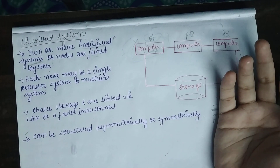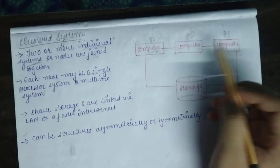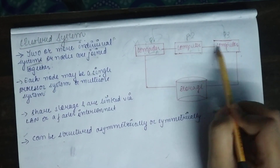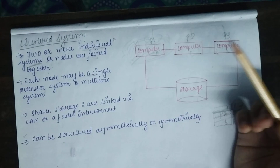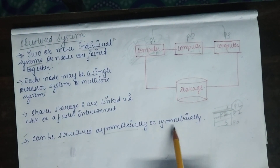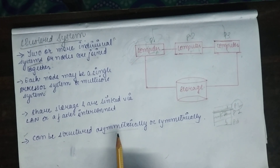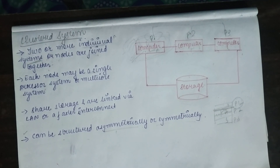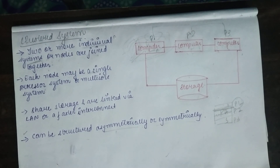Cluster systems can be structured asymmetrically or symmetrically. In an asymmetric cluster system, one machine is in hot standby mode — it does nothing but monitor the other running servers. If any server fails, the hot standby host becomes the active server and takes over.